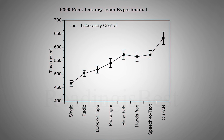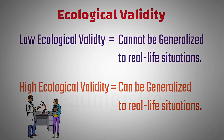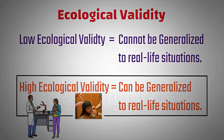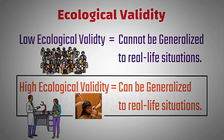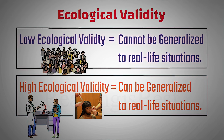Depending on the generalizability of this experiment to real-world settings, we can conclude whether its ecological validity is low or high. If the result is more generalizable in real-world settings, then the experiment is thought to be more ecologically valid. Whereas if the experiment is less generalizable to real-world settings, then the experiment is thought to be less ecologically valid.